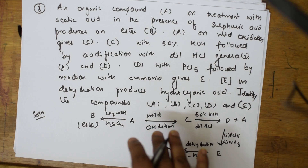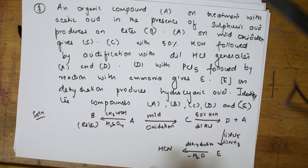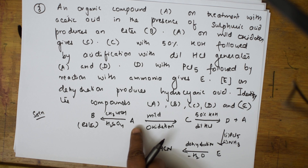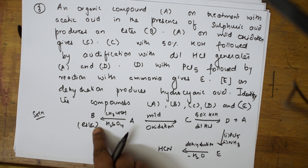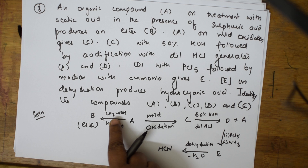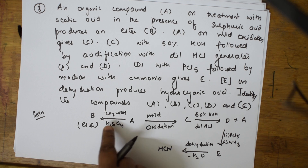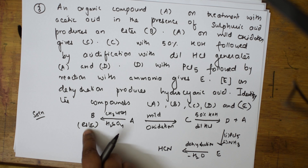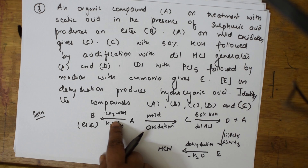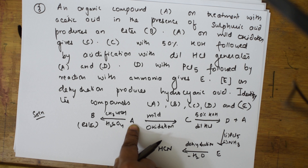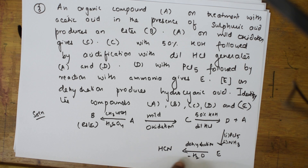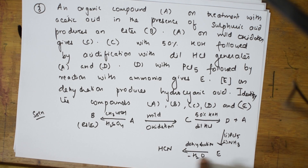Let us analyze everything and see how we have to solve. If you get this basic idea, everything will be clear. First of all, they have given a clue saying that compound A reacts with acetic acid and forms an ester. That means, acid plus alcohol in the presence of sulfuric acid gives ester. So, A should compulsorily be an alcohol. Also, formation of hydrogen cyanide by dehydration of E indicates that E should be an amide.